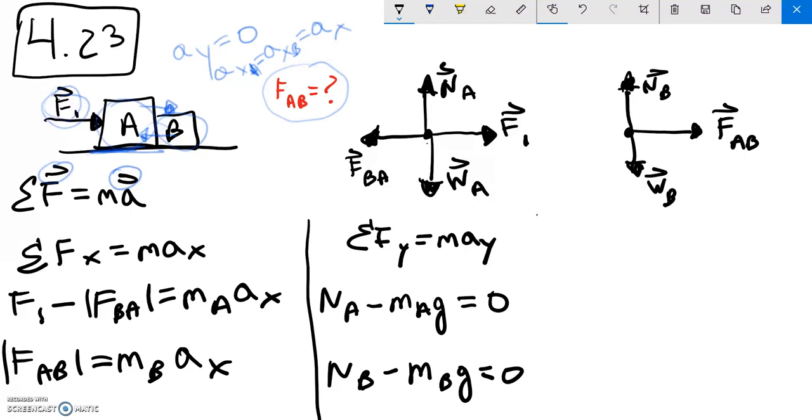And the final concept we need to write down now mathematically is that the magnitude of A acting on B has to be the same as the magnitude of B acting on A. As vectors they're opposite, but their magnitudes are the same.